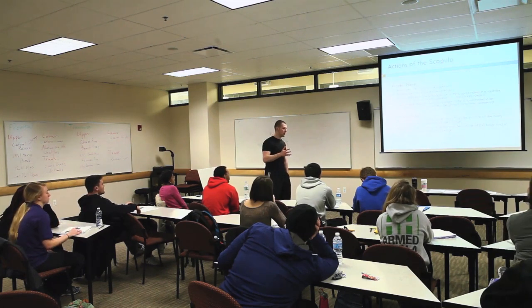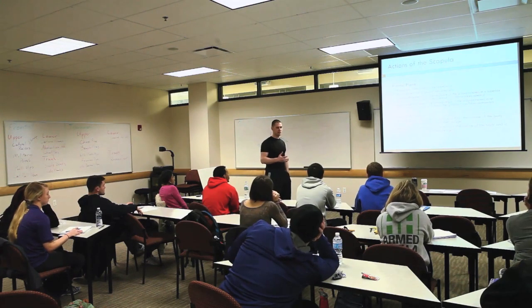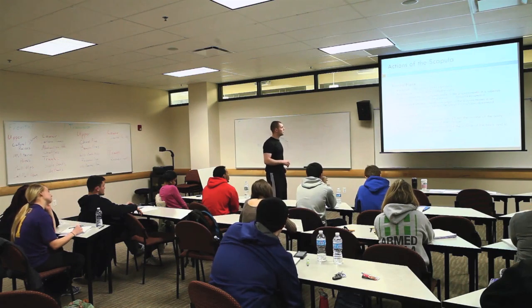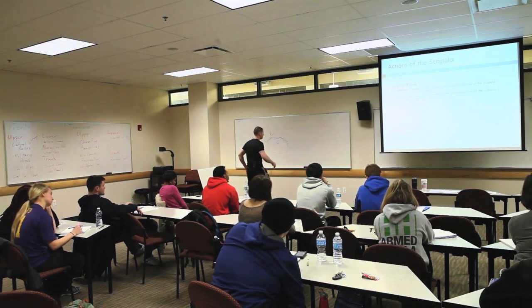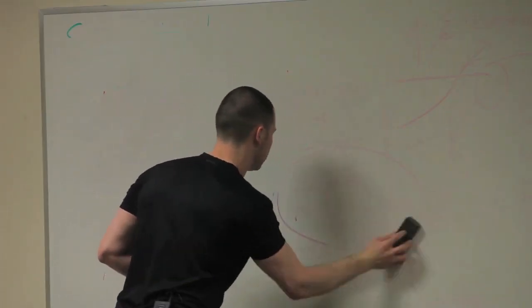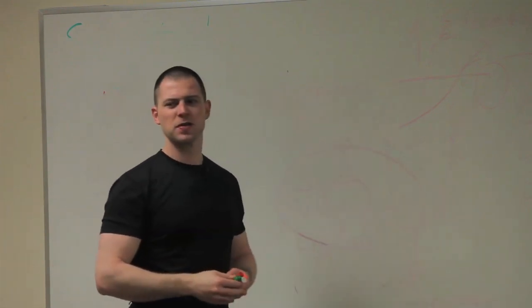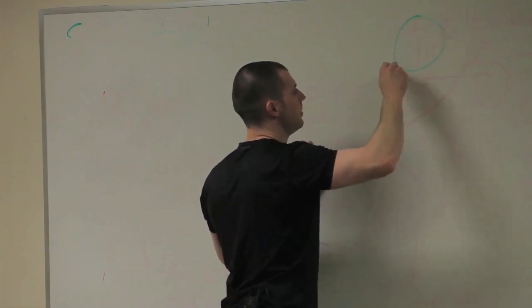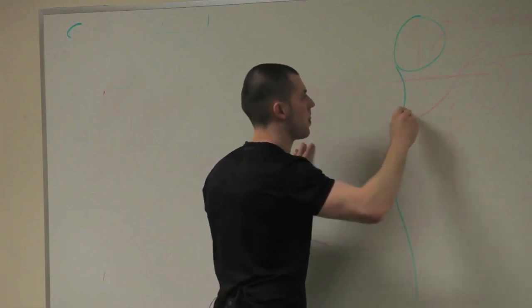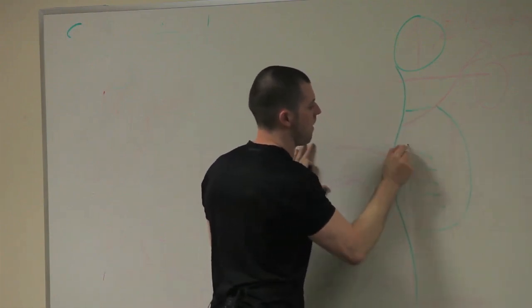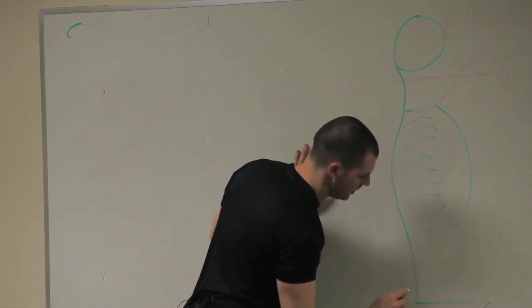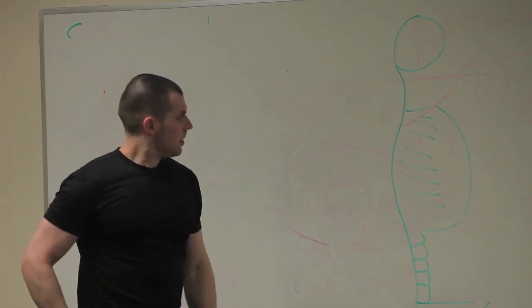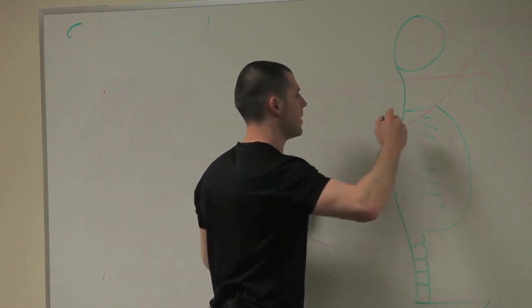Now there are two other joint actions for the scapula that you don't run into as often in your textbooks. But if you guys continue with my courses, you're going to have to be aware of, which is there is one set of sagittal plane motions for the scapula. It's called anterior and posterior tipping. So we won't refer to this too much for the rest of the day. You guys can put a little star by this as bonus material. But if I drew a skeleton from the side, pelvis, lumbar vertebrae. How do you guys like my picture? Good? Scapula sits just like this.